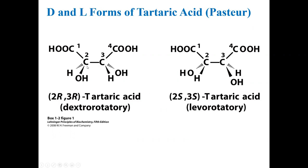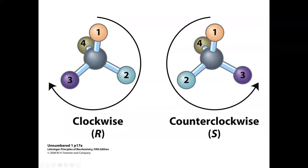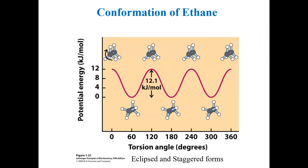To define R and S, you invoke the Cahn-Ingold-Prelog system: assign priority to groups attached to the asymmetric carbon, place the lowest priority group in the back, and look at groups 1, 2, 3 from the front. If 1→2→3 goes clockwise, it is R; if anti-clockwise, it is S.